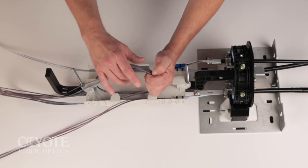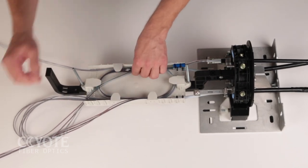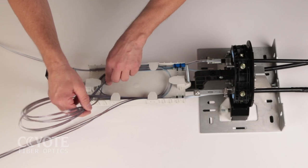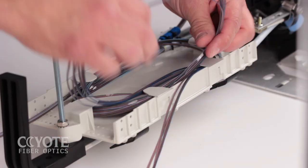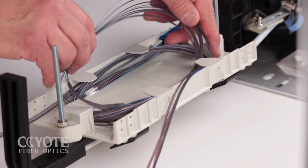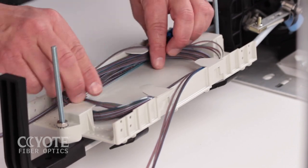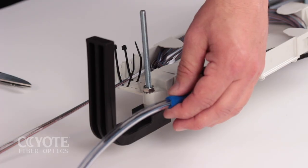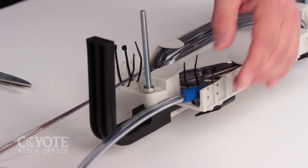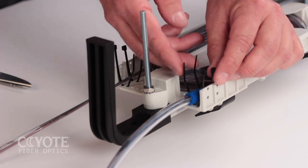Store the slack ribbon that will not be routed to a splice tray in the transition compartment. Slide the prepared transition tube over the ribbon you will be guiding to the splice tray. Secure it to the transition compartment.